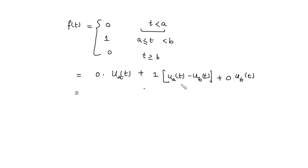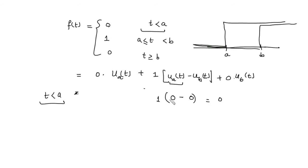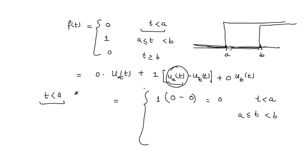Let's verify this is correct. The unit step u(t-a) means before 'a' the value is 0 and after 'a' the value is 1. The unit step u(t-b) means before 'b' the value is 0 and after 'b' the value is 1. When t < a, both unit steps give 0. When t is between 'a' and 'b', u(t-a) = 1 but u(t-b) = 0, giving 1 - 0 = 1.